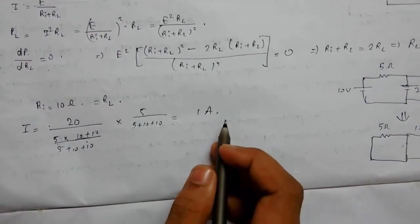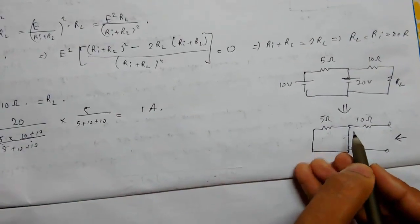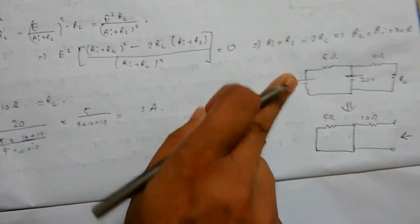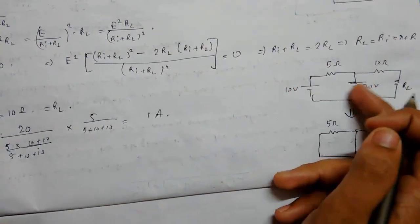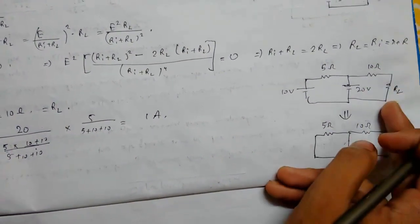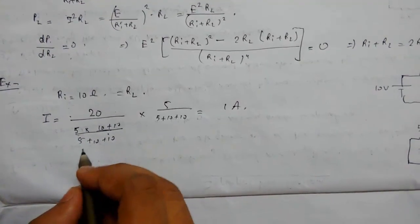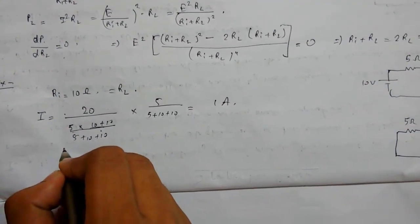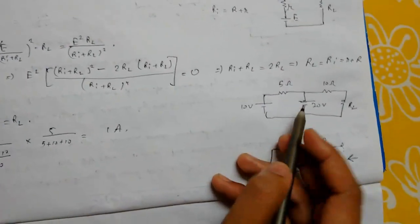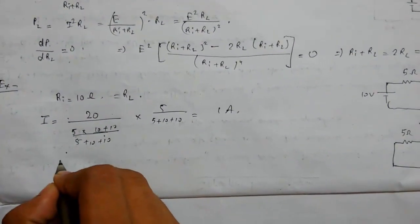ampere. We used the superposition theorem for calculating this - we eliminated parts and calculated the current through each source separately. The current came out as 1 ampere.